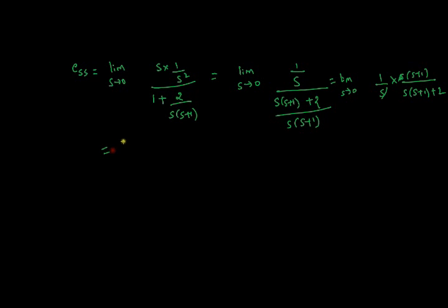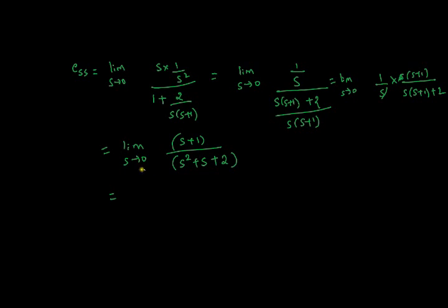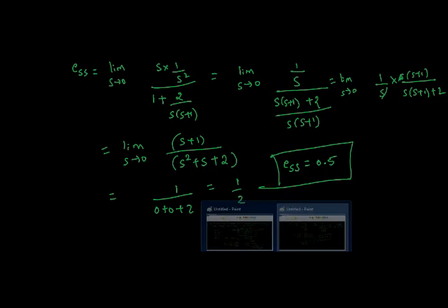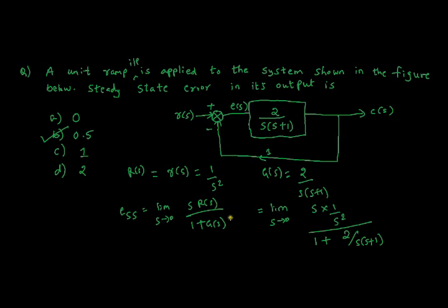We get: limit as s→0 of (s+1) / (s² + s + 2). Substituting s = 0, we get 1 in the numerator and 0 + 0 + 2 in the denominator, giving 1/2 = 0.5. The steady state error is 0.5, so the right answer is option B.